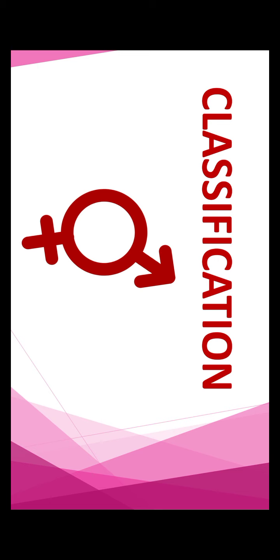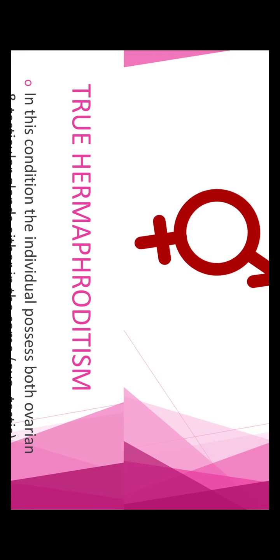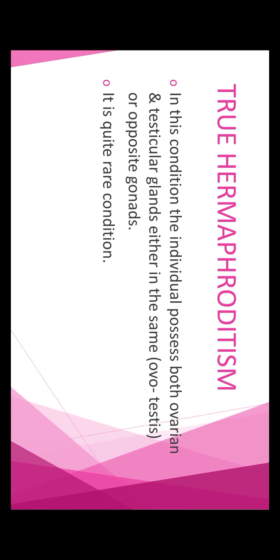Ambiguous genitalia is further classified into two parts. First is true hermaphroditism, and second is pseudo hermaphroditism. In true hermaphroditism, the individuals have both ovarian and testicular glands, either in the same or opposite gonads. So a child will have both ovaries and testes — either in the same gonad or in opposite gonads. This is a very rare condition.